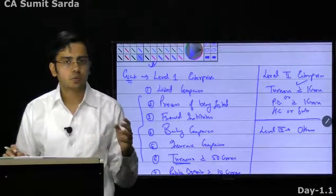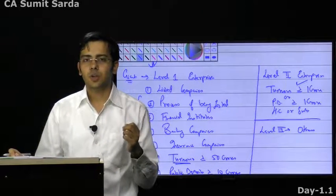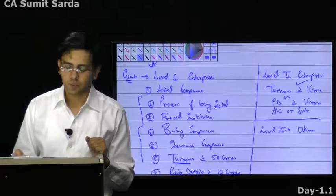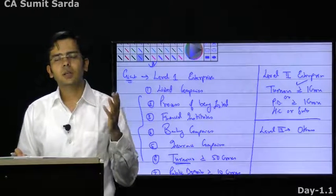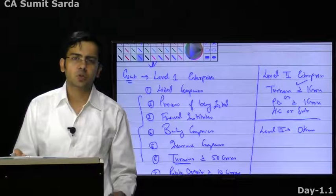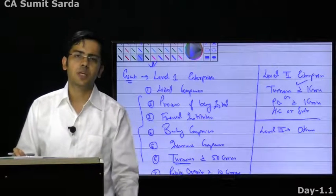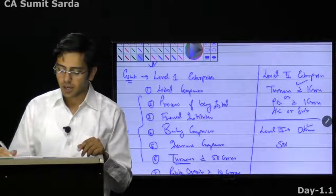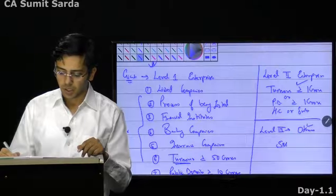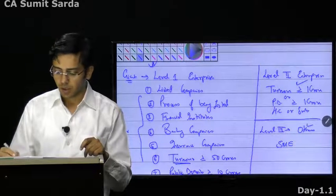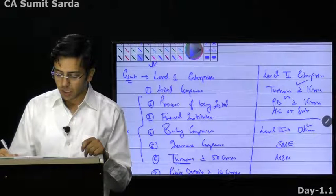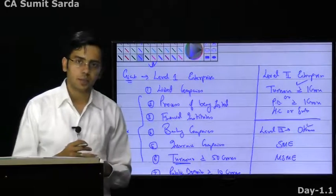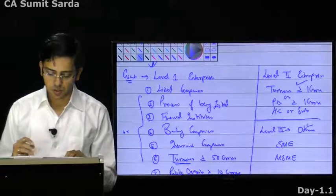Some of you must have a doubt — what if there is an associate or joint venture? Associates and joint ventures have not been covered; we are only talking about holding companies and subsidiaries. Those who don't fall under any category — no turnover, not listed, not a financial institute, not holding or subsidiary — fall under the last category: others. We generally call them small and medium enterprises, SMEs, or MSMEs. They can also fall under Level 2, with certain relaxations and exemptions.